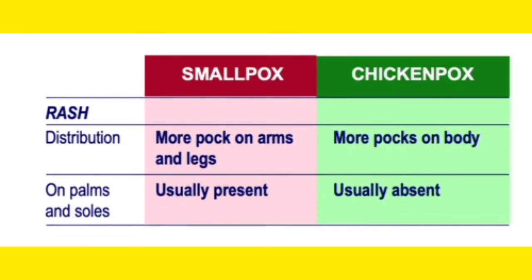To sum up distribution and palms and soles: in smallpox, distribution is more on the arms and legs — on the periphery. In chickenpox, it is more on the body — centripetal distribution. In smallpox you can find the rash on the palms and soles, but in chickenpox you cannot.